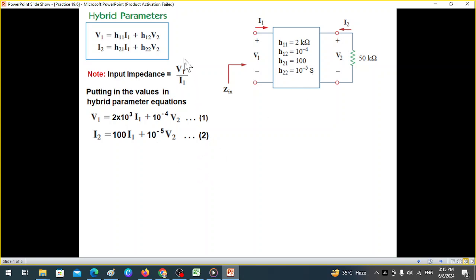Now keep in mind that we have to find V1 over I1. We need to eliminate I2 and V2.